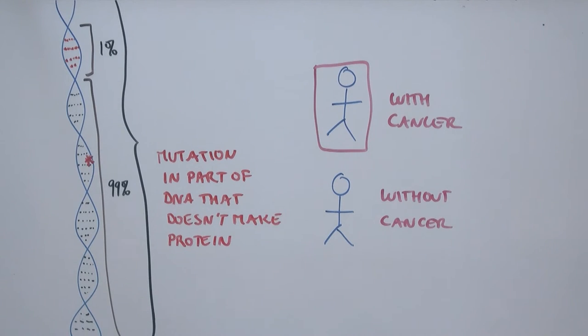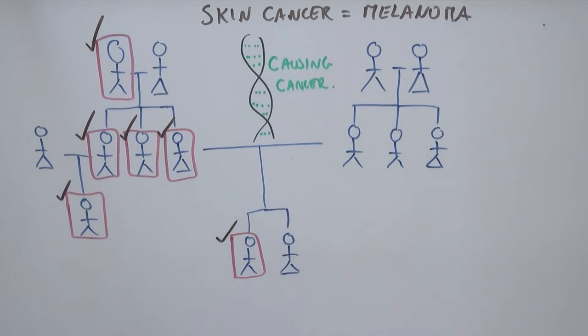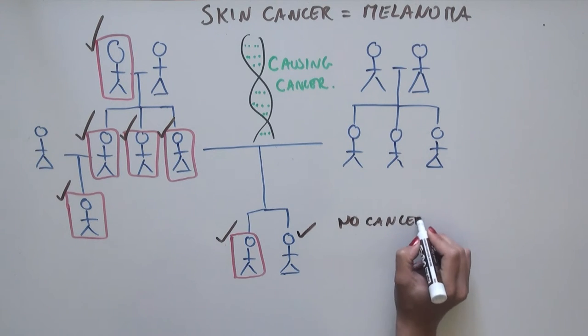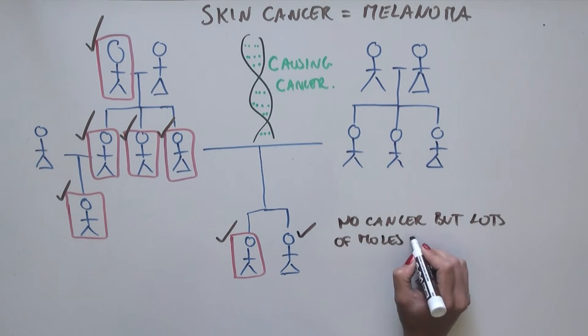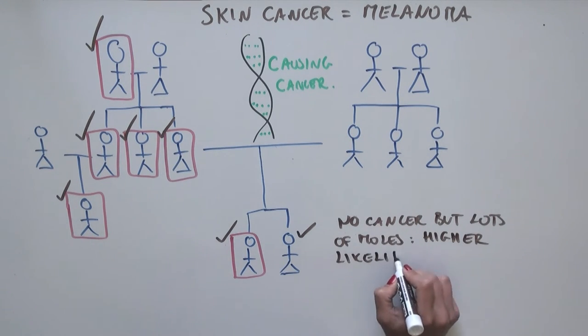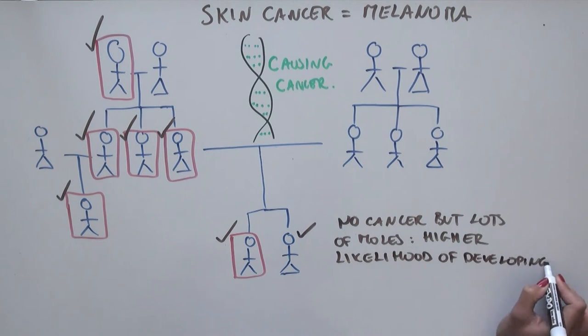This mutation was found in all individuals that had developed cancer, but only present in one individual that didn't develop cancer, but instead had many moles, which increases one's likelihood of developing melanoma.